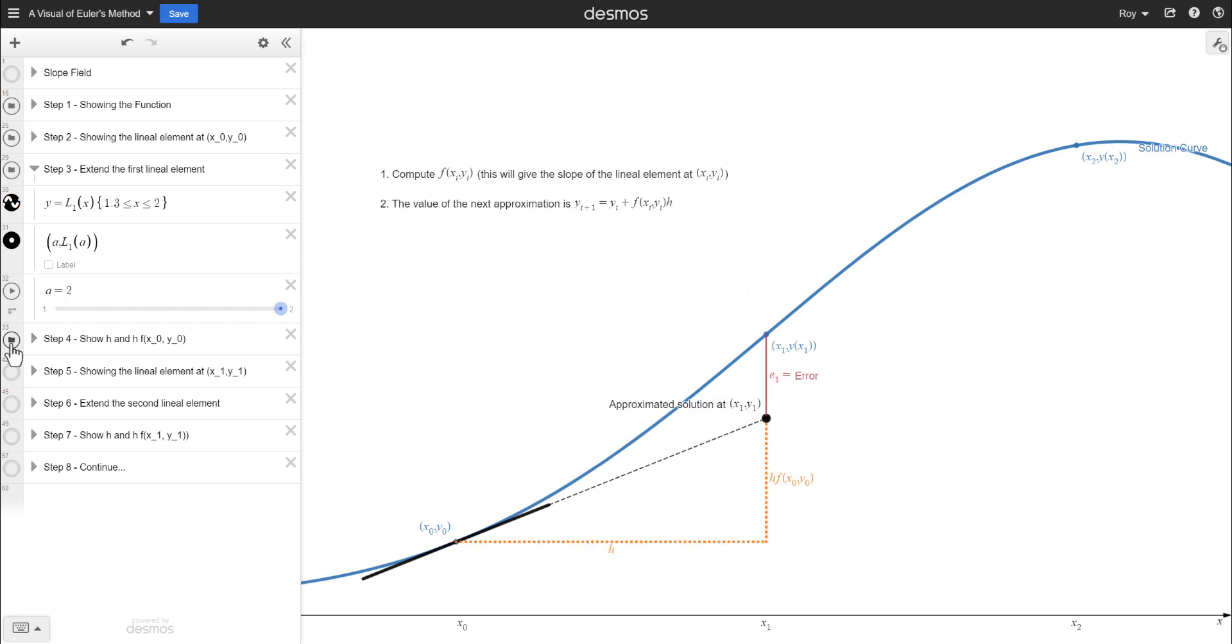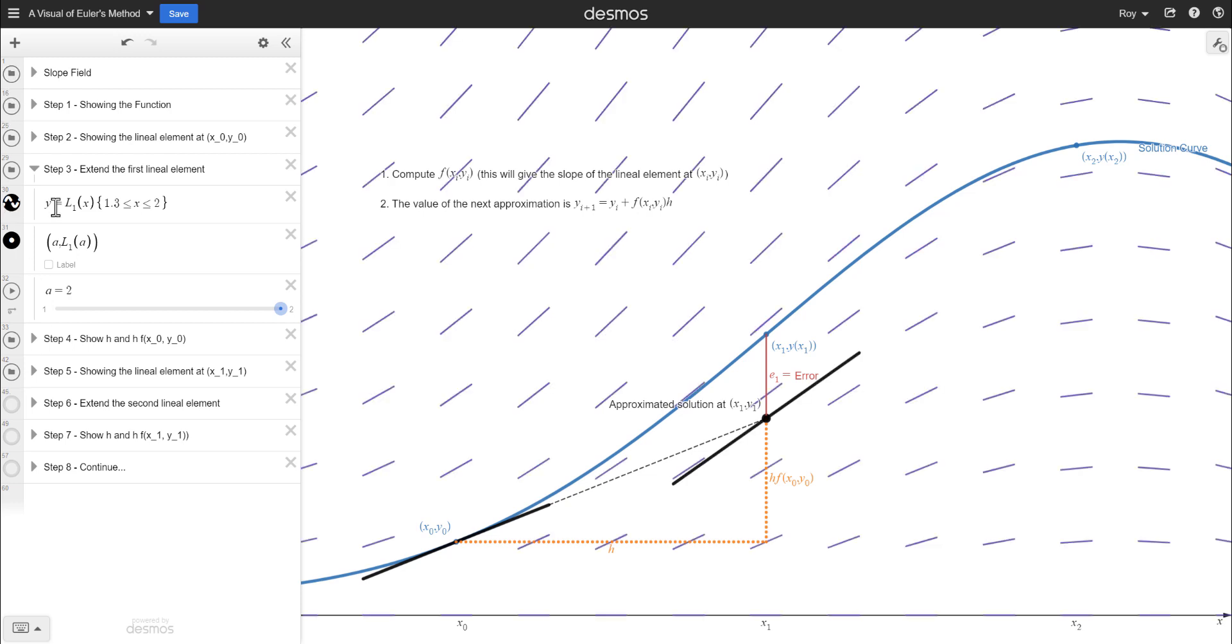And we want to use that as our approximation because we don't know what this curve is. And then I get to click on this and say, but there's an error, right? We talk about that up here. I say how to compute the next value. And then I continue forward. So here's my next element. I can show the slope field and say, look how it matches up to the slope field.